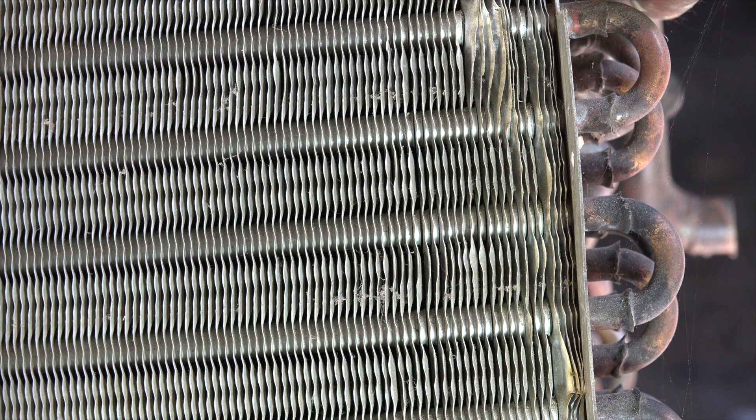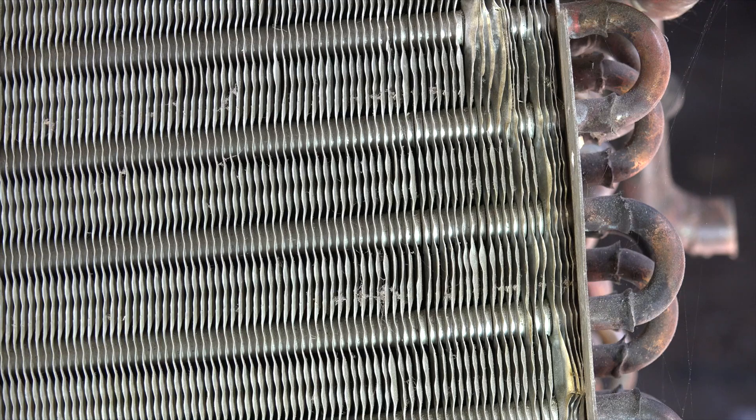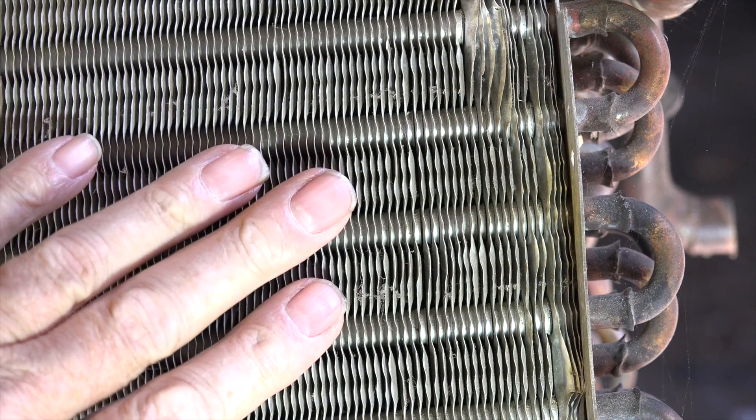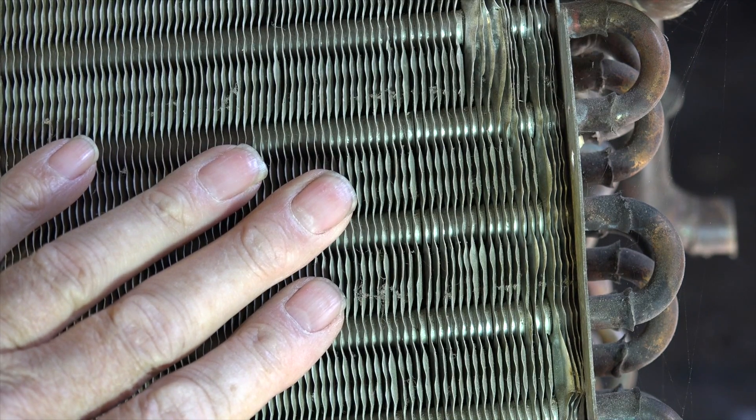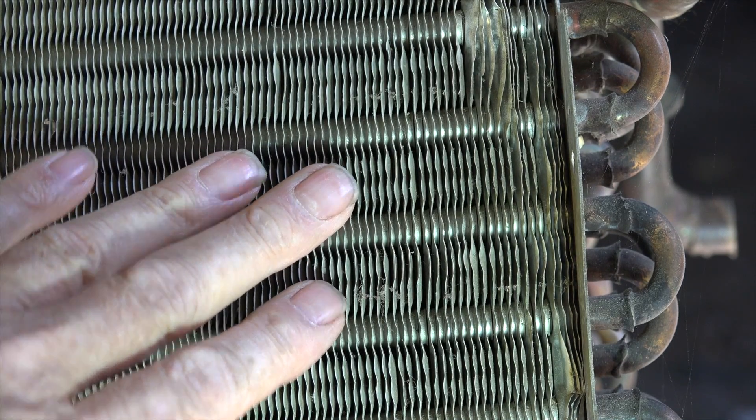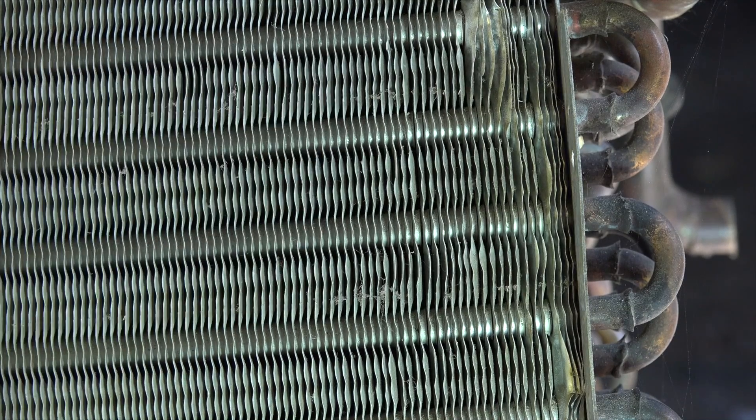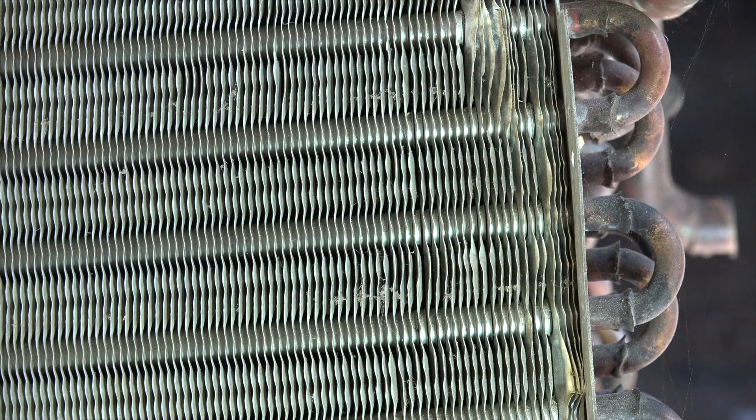Now we're going to take a look at an indoor coil. Remember, our evaporating temperature was 36 degrees. I'm evaporating at 36—that's well under that 41 dew point. However, virtually no part of this coil is actually 36 degrees.